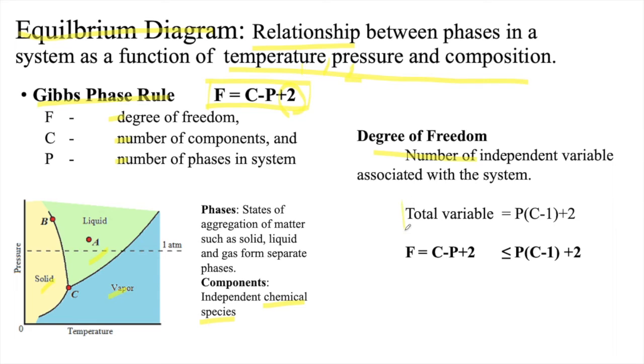The total variable is P times (C minus 1) plus 2, which can be finally equated as F equals C minus P plus 2.